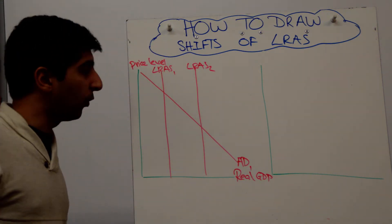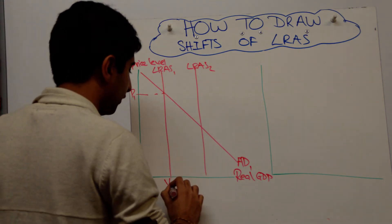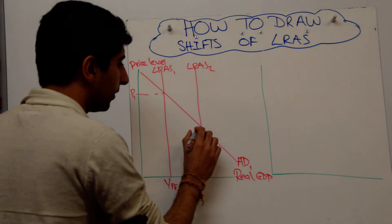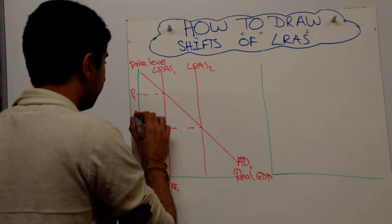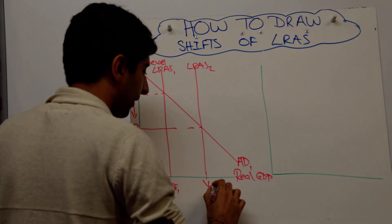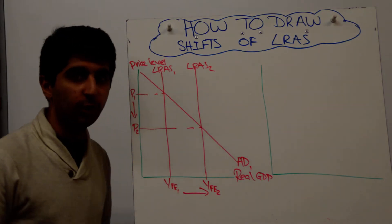That will score you all the marks. All you need to label is your initial price level and your initial full employment level of output, YFE 1. And now your new equilibrium, which is with a lower price level, lower cost for inflation, with a higher level of actual growth and potential growth. And simply stick an arrow on to show that.